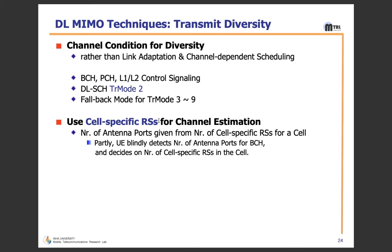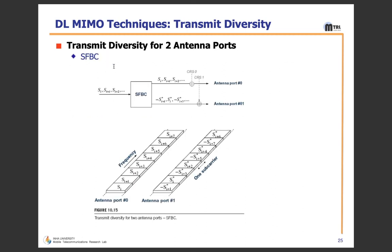For transmit diversity, cell-specific reference signals are used for channel estimation. The number of antenna ports is given by the number of cell-specific reference signals for a cell. The UE blindly detects the number of antenna ports from the BCH. For SFBC, there is a serial-to-parallel converter and two antenna ports. CRS is added at each antenna port. Antenna port 0 and antenna port 1 do not carry the same information at the same time — antenna port 0 carries subcarrier S_i while antenna port 1 carries the conjugate of S_{i+1}.